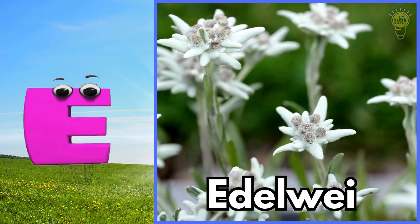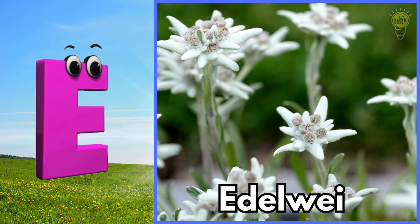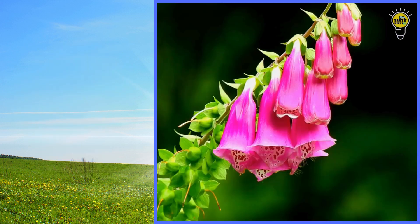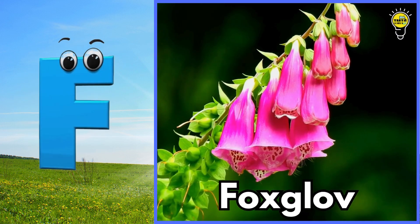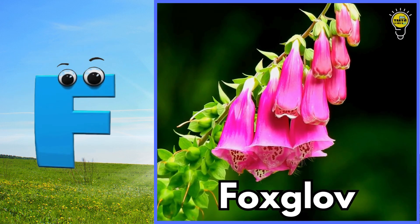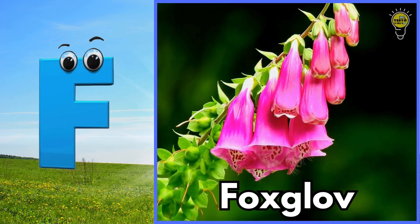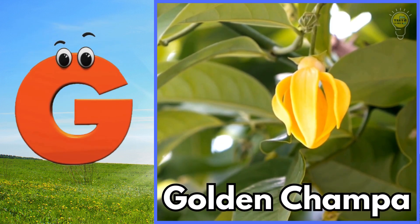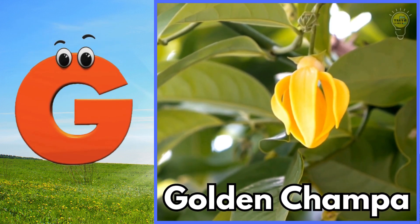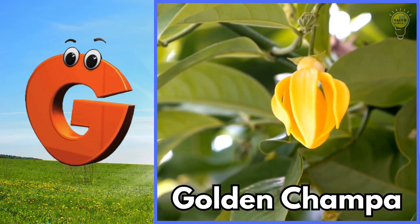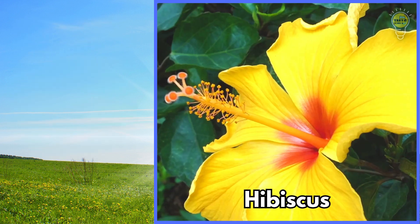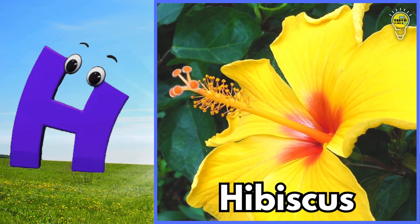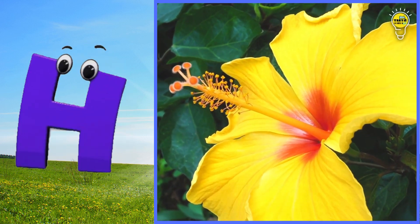E is for edelweiss flower, edelweiss flower. F is for foxglove flower, foxglove flower. G is for golden compa flower, golden compa flower. H is for hibiscus flower, hibiscus flower.